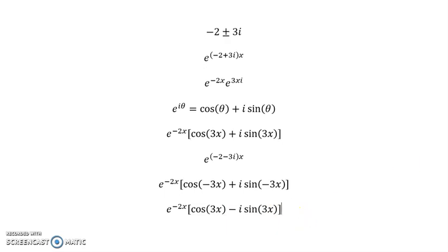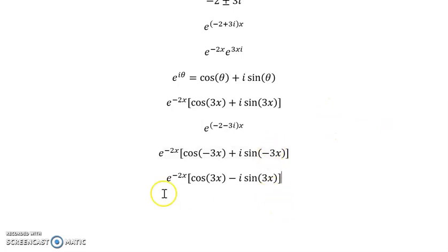So what happens now is we can add these two expressions together. If we add them, we just get 2 times e^(-2x) cosine 3x. And if we subtract them, this one minus this one, then we end up with 2i times e^(-2x) sine 3x.